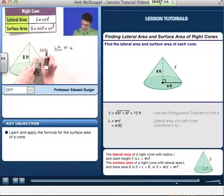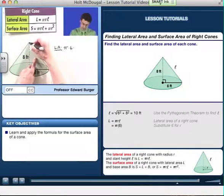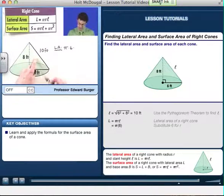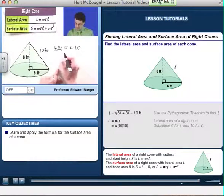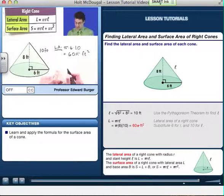Now, if you didn't see that, you can try it and verify that, in fact, this slant height using the Pythagorean theorem is 10. Anyway, it's 10, so we've got 10 right there. And so, therefore, we see that the lateral area is going to be 60 pi, and my units are feet squared.